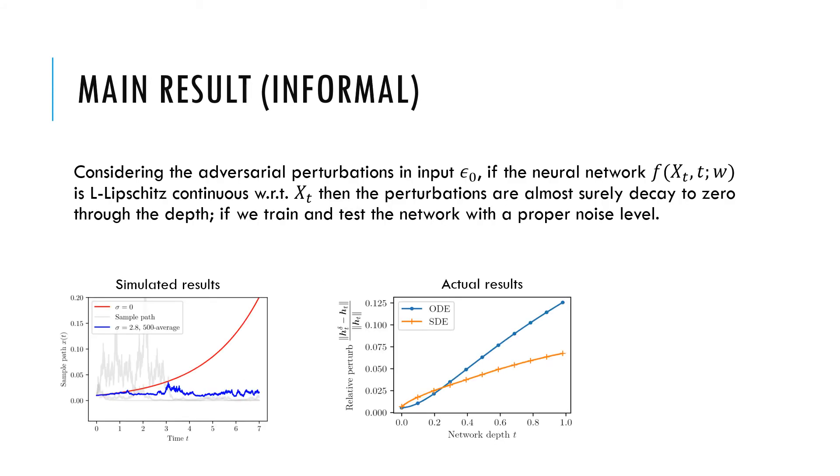Based on the Neural SDE framework, we could borrow the Lyapunov stability theory in stochastic control to analyze the stability of neural networks under adversarial perturbation. Informally, we are able to develop the relationship between the Lipschitz of the network with the variance of noise layers in order to stabilize the inference.